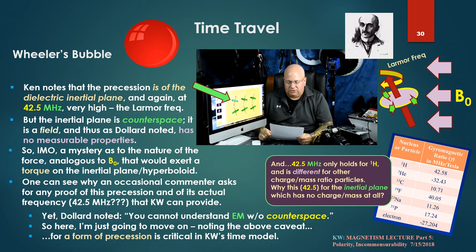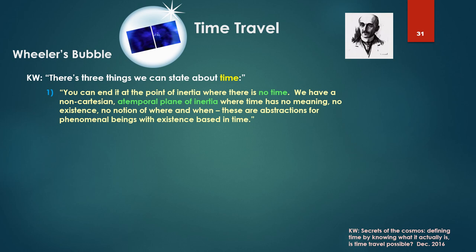Yet, Dollard noted, as we saw in number 18, you cannot understand electromagnetism without the notion of counter space and therefore the dielectric inertial plane. So we've got a problem here. And I'm just going to move on, noting the above caveats, for a form of precession is critical to Ken Wheeler's time travel model which we want to look at.